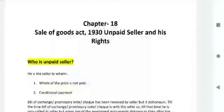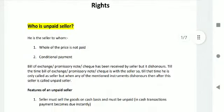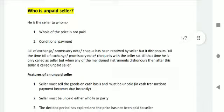Rights of unpaid seller under the Sale of Goods Act 1930. Who is an unpaid seller? He is the seller to whom all of the price is not paid. The second case is conditional payment — where a bill of exchange, promissory note, or check has been received by the seller but it is dishonored. Till the time the bill of exchange, promissory note, or check is with the seller, he is only called a seller.